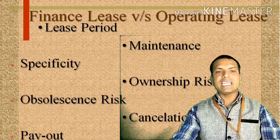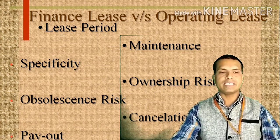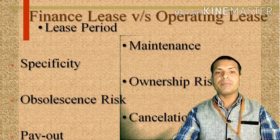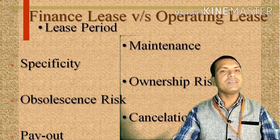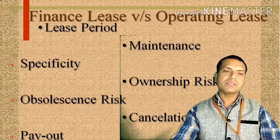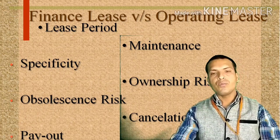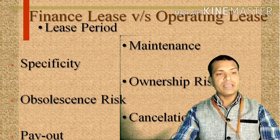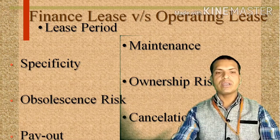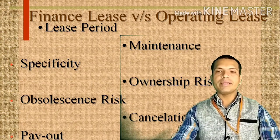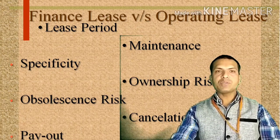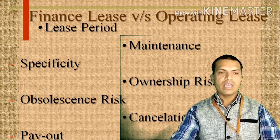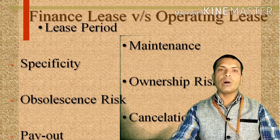Regarding specificity: the asset leased out is used specifically for a lessee — the asset is prepared for or purchased for the lessee. In an operating lease, the asset leased out may be used commonly by a number of users in sequence. Regarding ownership risk: in a financial lease, the lessee bears the risk and reward associated with the use of the asset leased, whereas in an operating lease the risk is borne by the lessor. Regarding obsolescence risk: the lessee bears the risk of obsolescence in case of a financial lease, while in case of an operating lease, the lessor bears the risk of obsolescence.